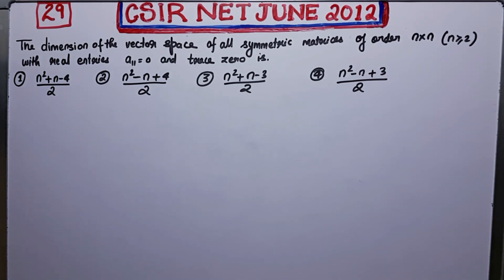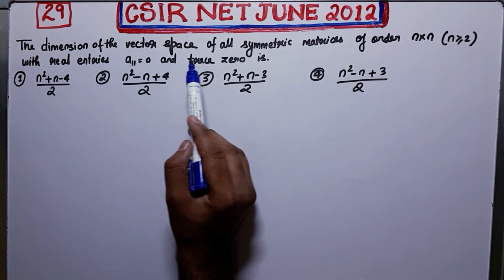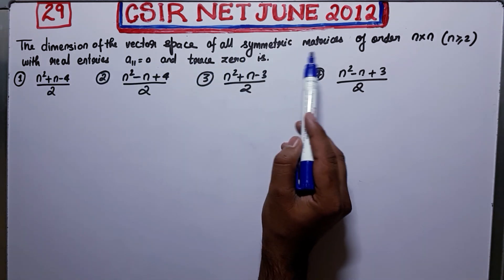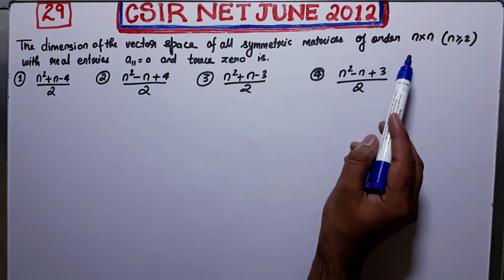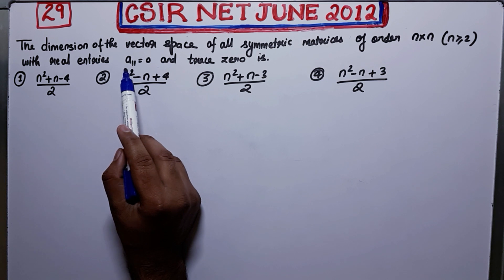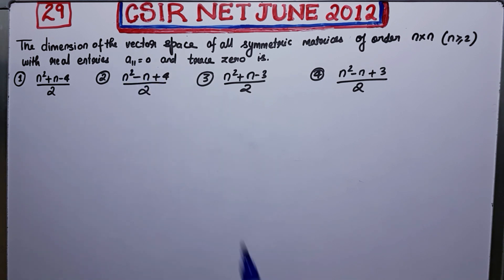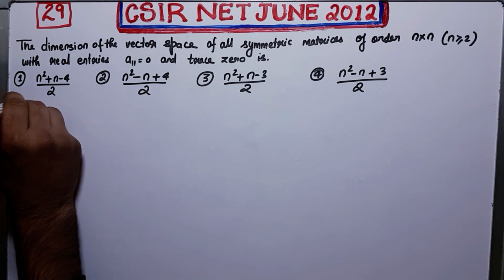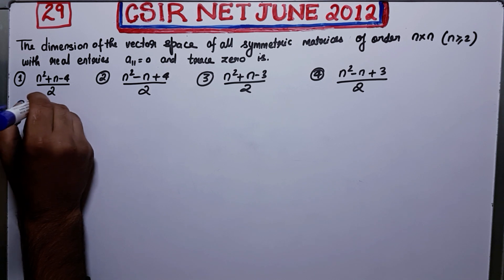Welcome back. We're solving problem number 29 of CSIR NET June 2012. This is a question from linear algebra. The question asks for the dimension of the vector space of all symmetric matrices of order n×n with real entries, given the conditions that a₁₁ must be 0 and the trace must be 0.